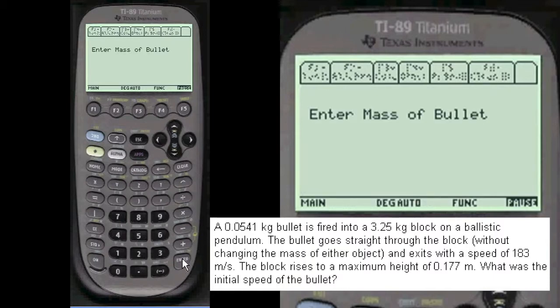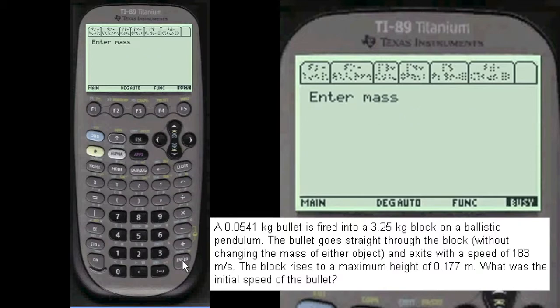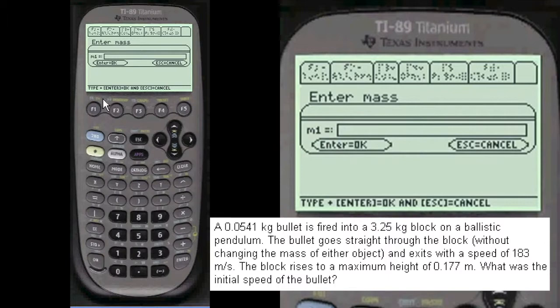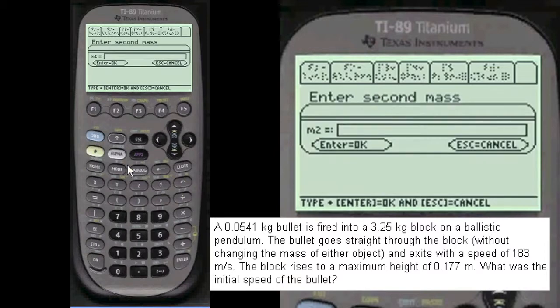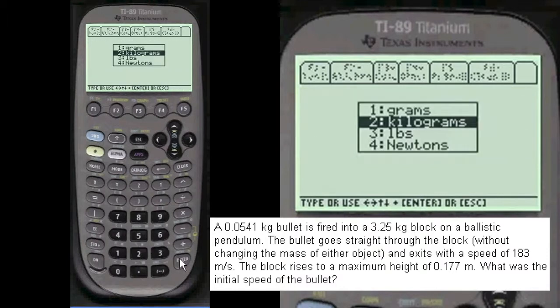We're going to enter the mass of the bullet. You have to press alpha before you enter anything in these lines here. Alpha 0.0541 kilograms. The mass of the block is alpha 3.25 kilograms.